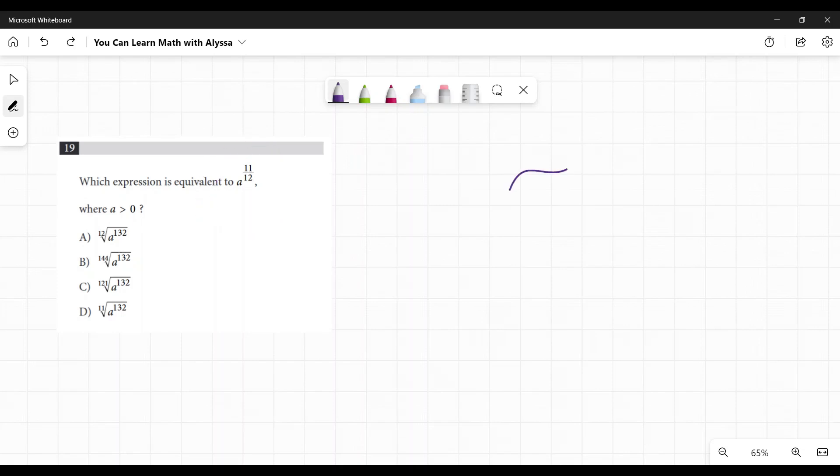How fractional exponents work is like this. If I have 5 to the power of 2 thirds, it is the same as, make a little root sign. This 5 goes under here. The 2 becomes the power and the 3 becomes the root. 5 to the power of 2 thirds is the same as the cube root of 5 squared.